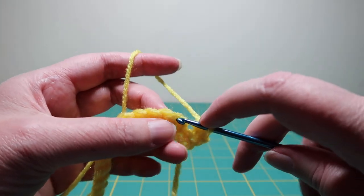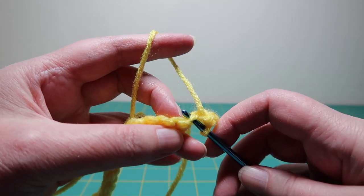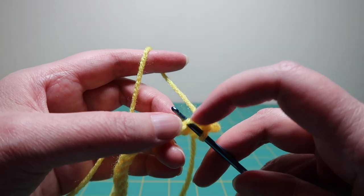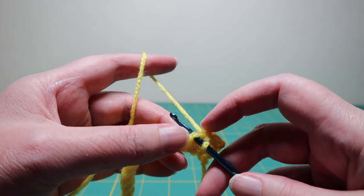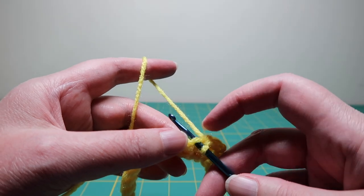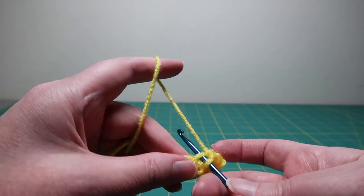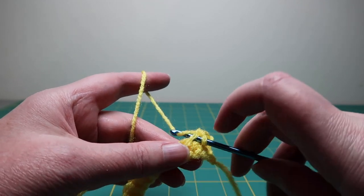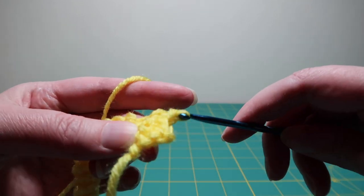I'll show you again here. Stick it up through just that first strand. So there should only be one strand on the hook plus your loop back there. Yarn over, pull through, yarn over, pull through both loops.